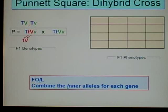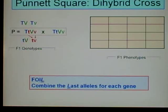Then we go for the I, which is for inner. We combine the inner alleles for each gene. That would be the little T and the big V. They lie in the middle. Those are the alleles, one for each gene that lie in the middle of the expression.